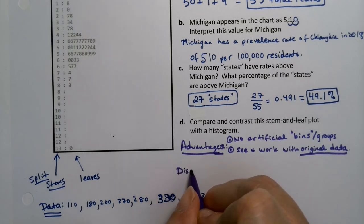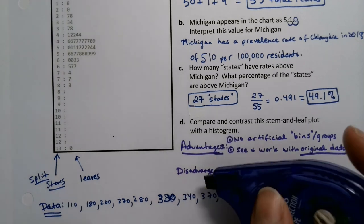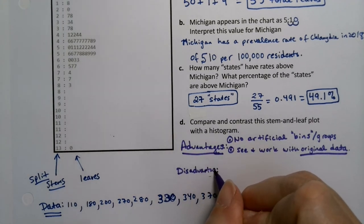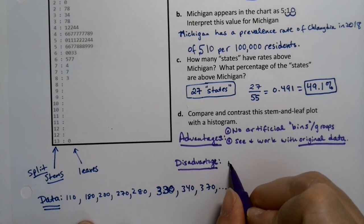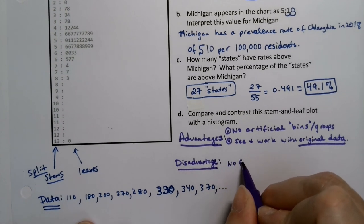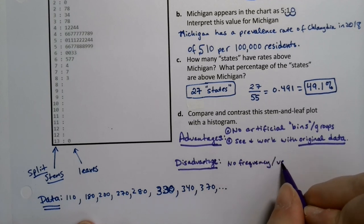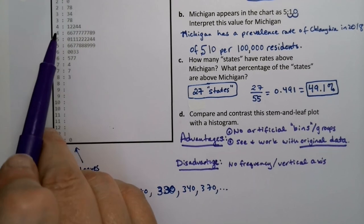The disadvantage is that when you're working with a histogram, you have a vertical axis for frequency. And that makes it really easy to see how many are in one group or how many are in another. But here you have to count them.